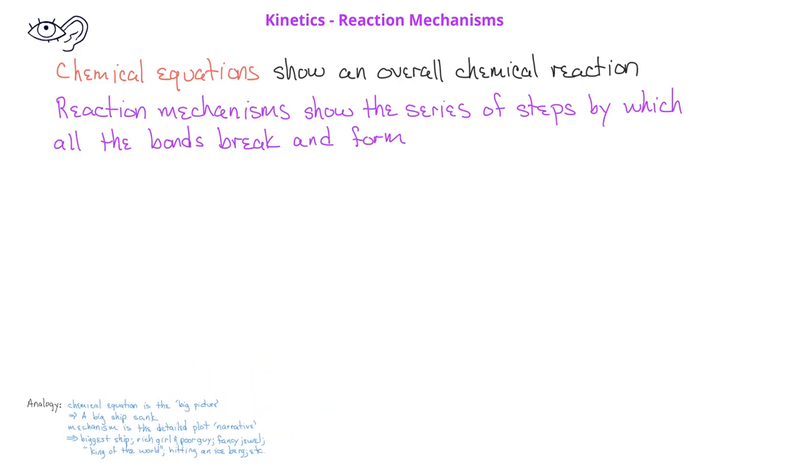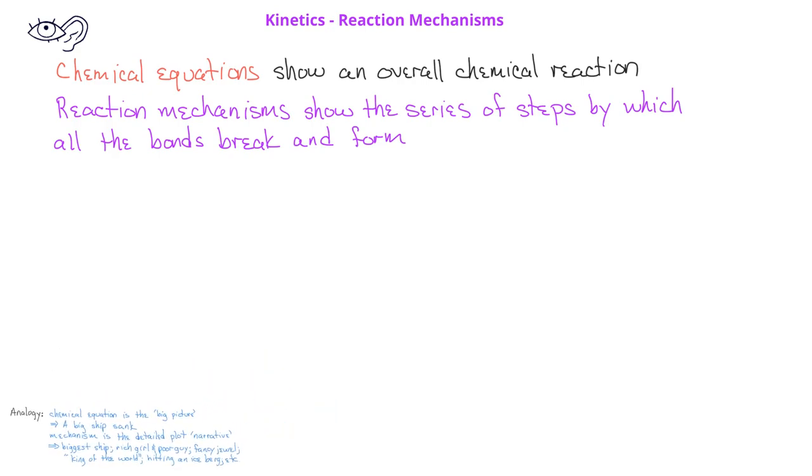Let's look at an example. We can talk about the chemical reaction with the equation H2 gas reacts with two ICl gas molecules to produce two HCl gas and one I2 gas. However, if we are interested in how the actual bonds break and form, we can write a mechanism for this overall equation.